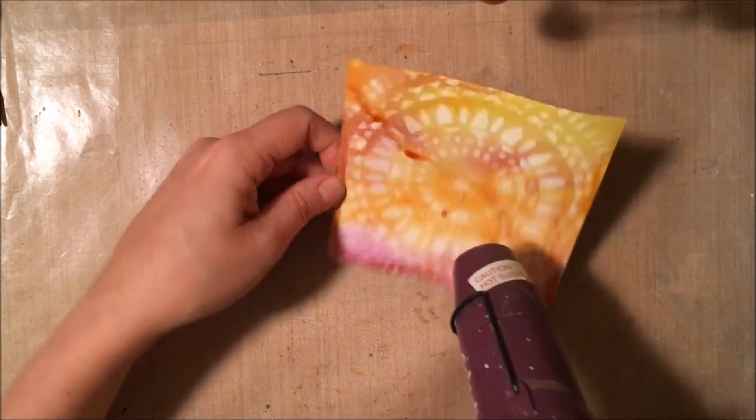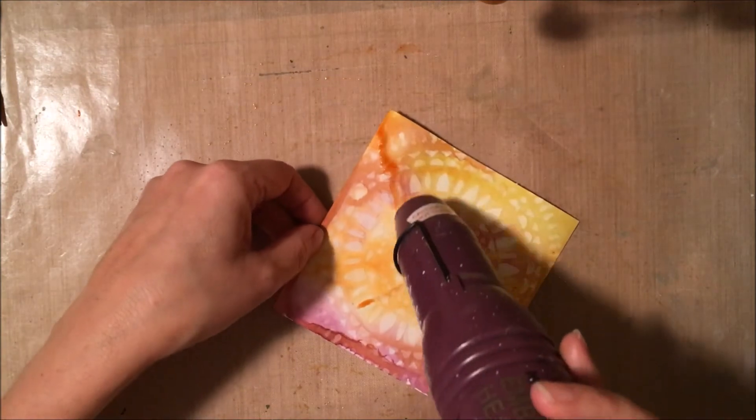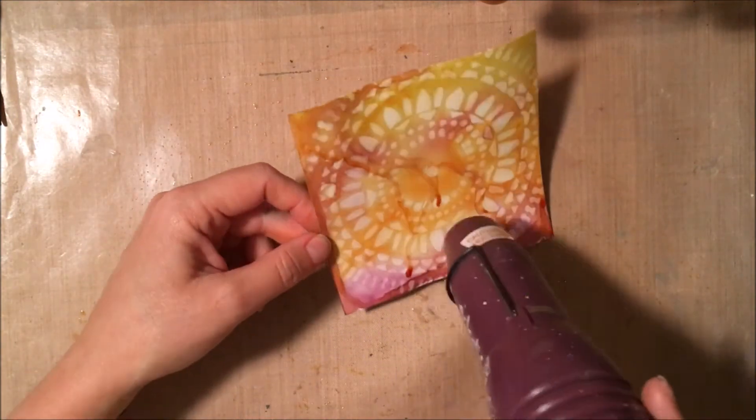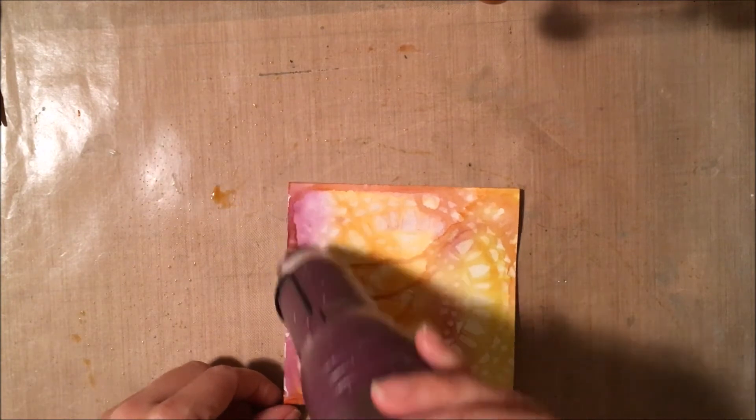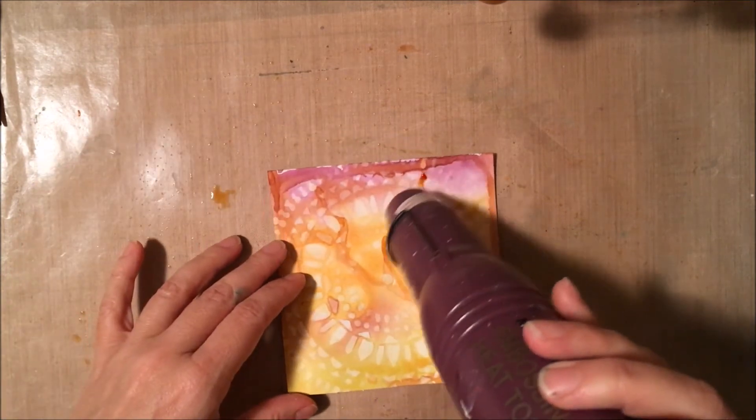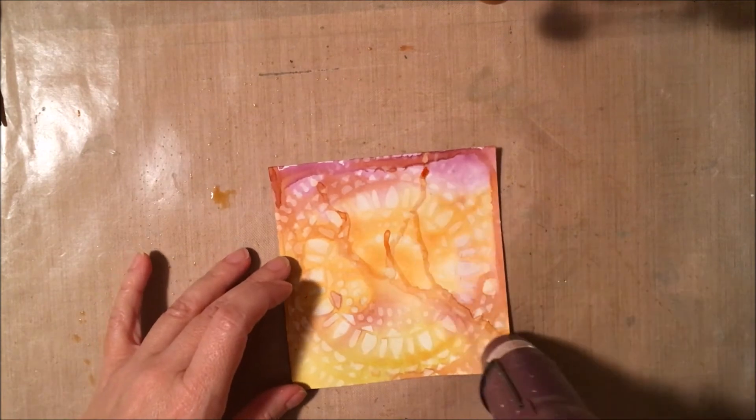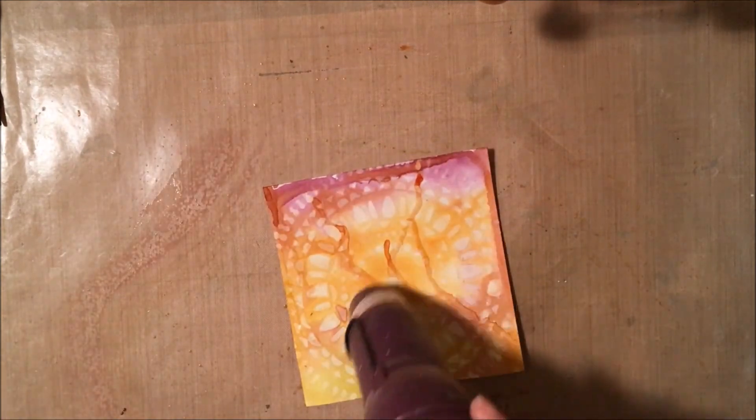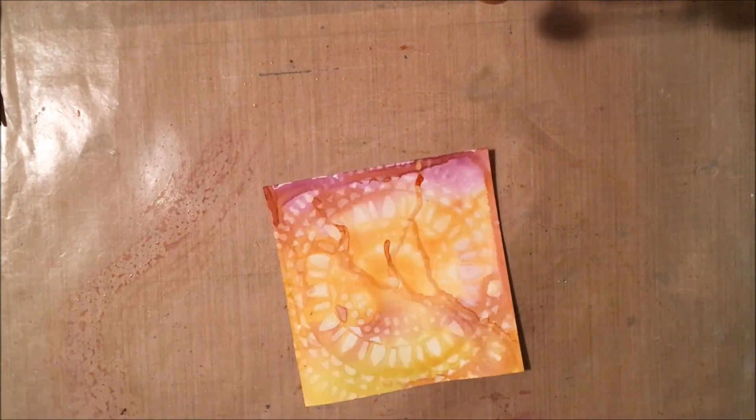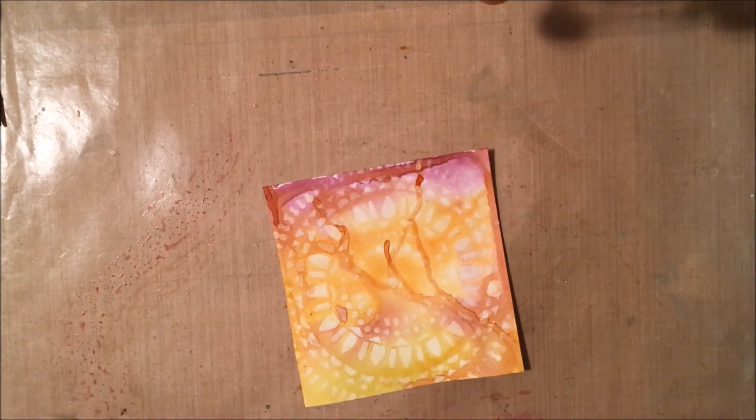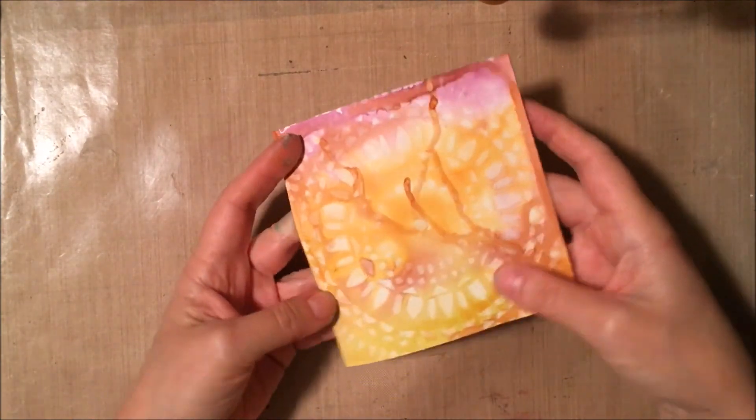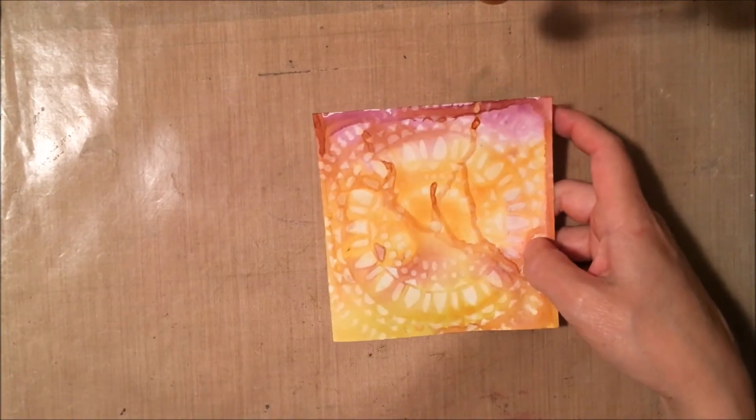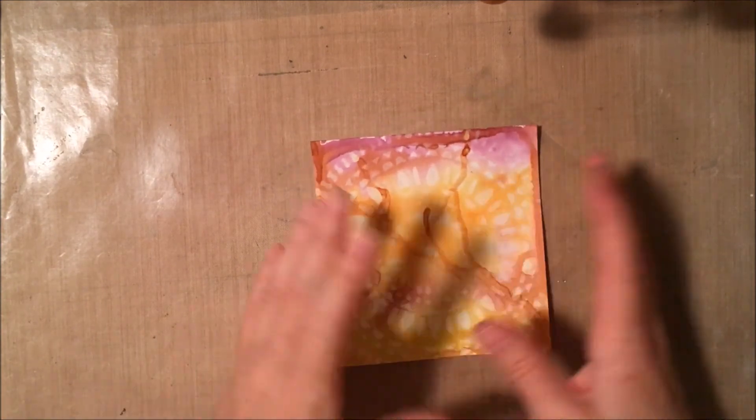And this is a great technique to do anything, this works really well in the background of a tag or an art journal page or any way that you want to use gesso. The gesso will always resist distress ink. I haven't tried it with the oxides yet. I don't know if it will react the same because the oxides are a fusion ink. So they have some pigment ink in them. And they might be a little too opaque. I'm not exactly sure. But that would be a good test. I'll have to try that out. So love those drips on there. Just awesome.